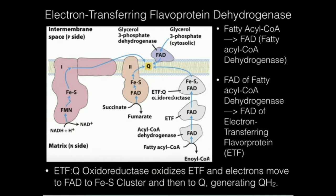It turns out there's another protein that is just as important as complex 2 in terms of delivering electrons to the electron transport chain for the production of coenzyme Q in the reduced state, so that you can pump protons. That enzyme is electron-transferring flavoprotein dehydrogenase — also called ETFQ oxidoreductase, which stands for electron-transferring flavoprotein ubiquinone oxidoreductase.